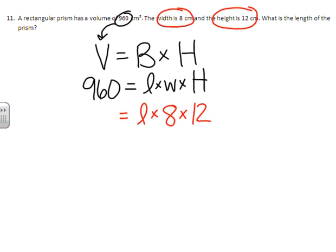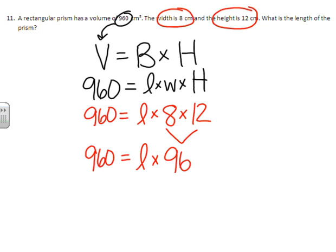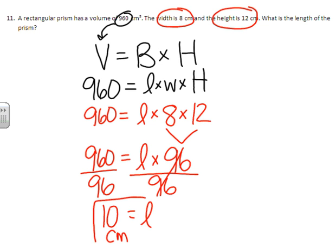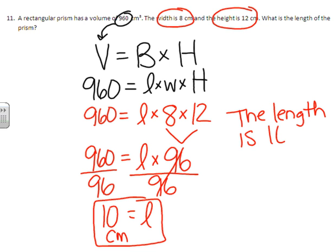So the only thing we don't know is the length. Let's simplify what we can. So 8 times 12 gives us 96. So we have length times 96 equals 960. The opposite of multiplying by 96, or the inverse, is to divide by 96. So length equals 10. And this time it is in centimeters. So the length is 10 centimeters.